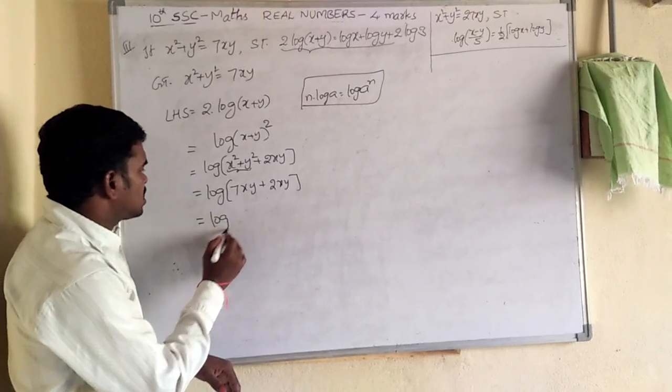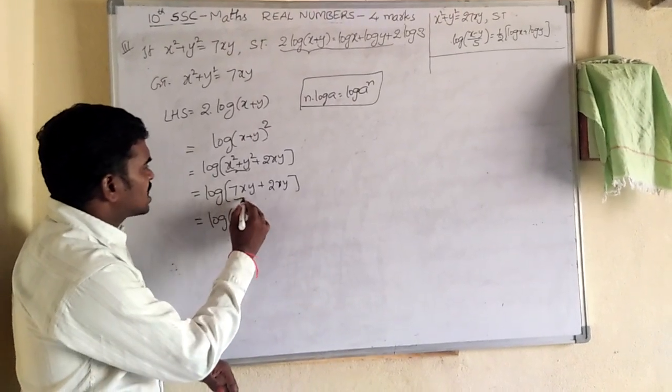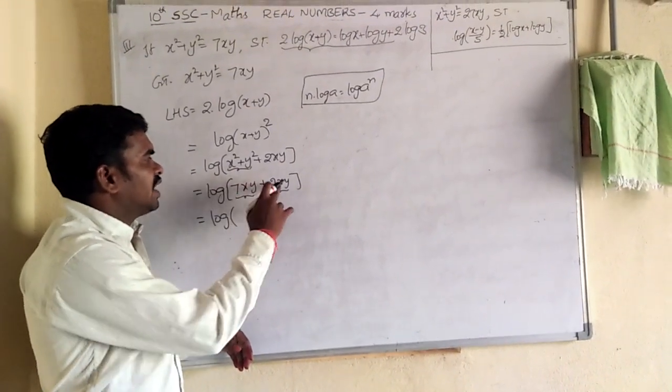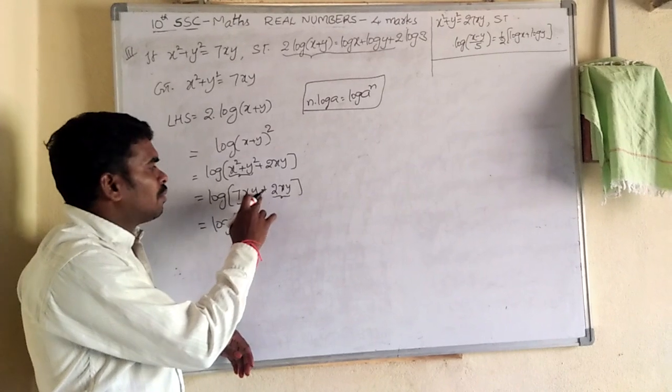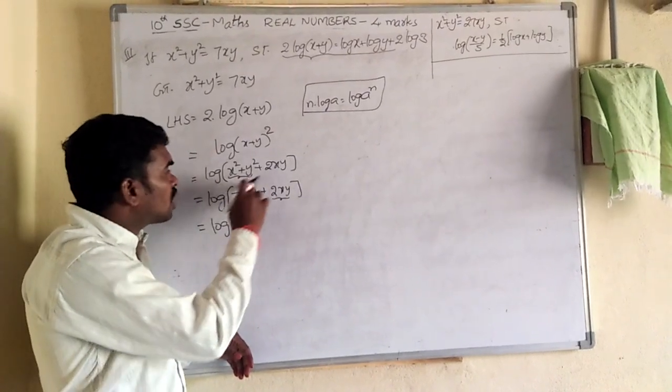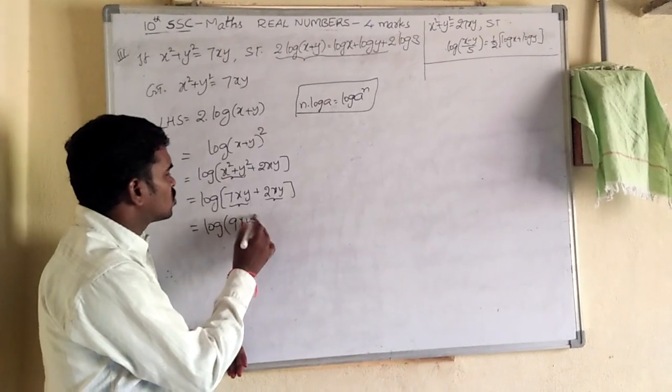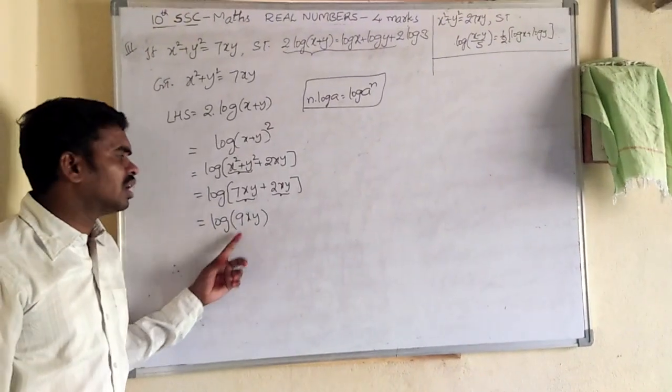Now log as it is, 7xy plus 2xy. So means xy terms out, 2. So plus is there. So total xy terms to 7, I need to, 9xy terms are there. So 7xy plus 2xy means what? 9xy.